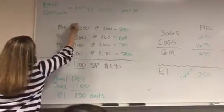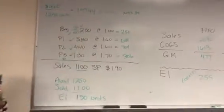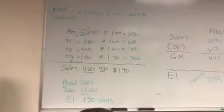100 units will be sold, and that will leave 150 in our ending inventory, which is what we were expecting. We were expecting 150 units to be in our ending inventory.